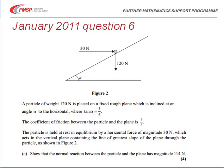The question starts by describing the situation in Figure 2. A particle of weight 120 newtons is placed on a fixed rough plane which is inclined at an angle alpha to the horizontal, and we're told that tan alpha equals three quarters. The coefficient of friction between the particle and the plane is one half.